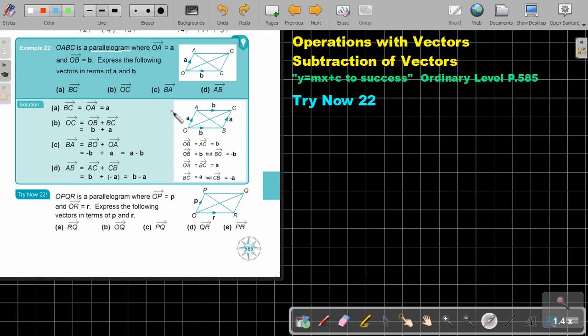Remember, because this is a parallelogram, I can say if this is A, then BC will be equal to OA, so this will also be A. And if this is B, then OB will be equal to AC, and that will also be B. So if I'm asking you to find BC, I'm going to say BC is equal to OA, so that's just A.